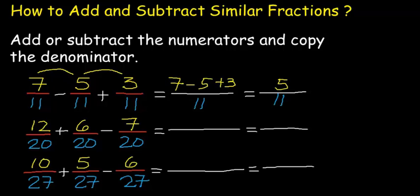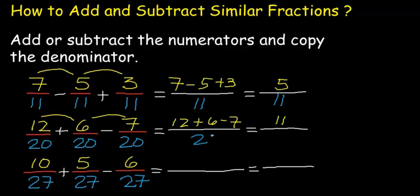Number 2: we have 12 over 20 plus 6 over 20 minus 7 over 20. Add or subtract all of the numerators: 12 plus 6 minus 7. 12 plus 6 is 18, minus 7 is 11. And for our denominator, we will just copy the denominator, which is 20. This will now be 11 over 20.